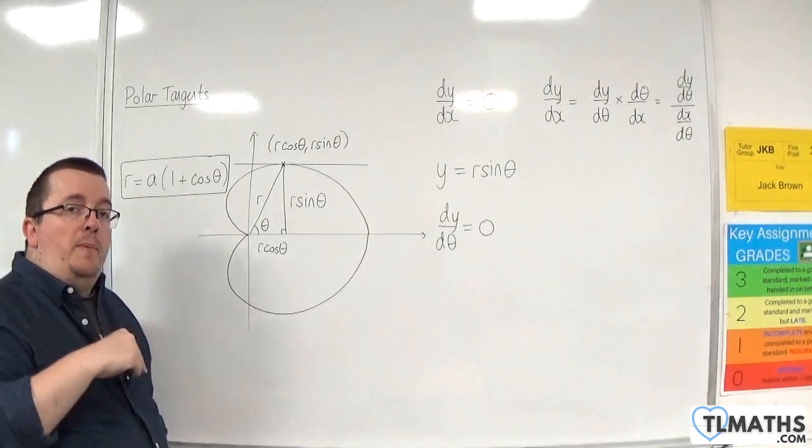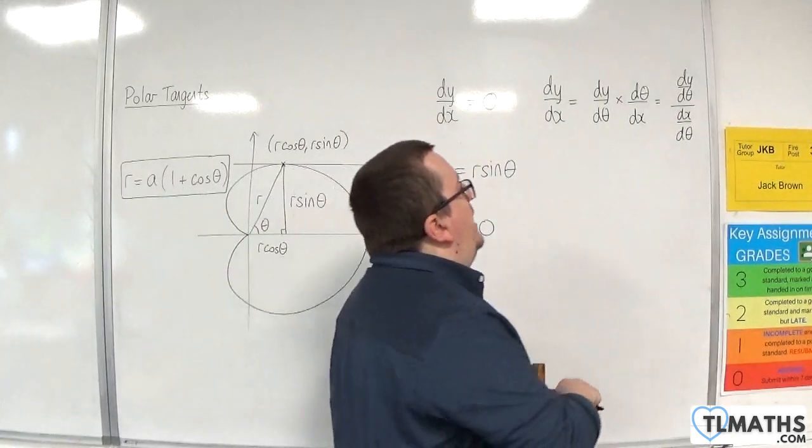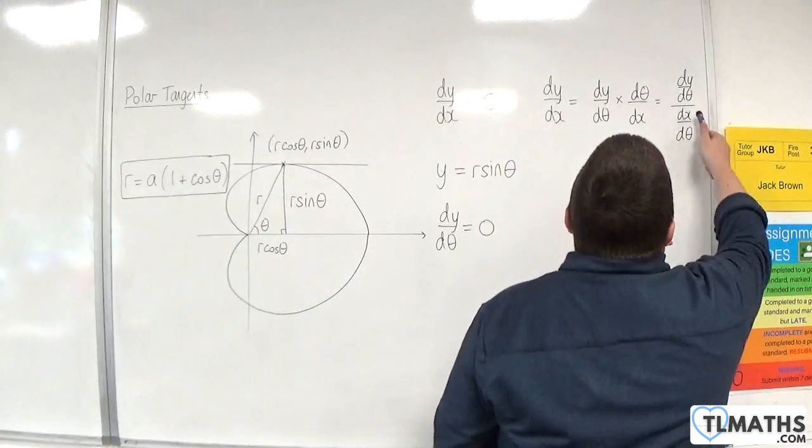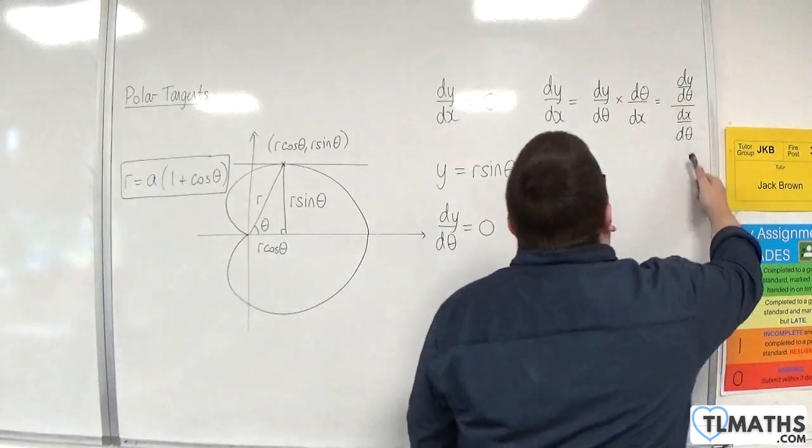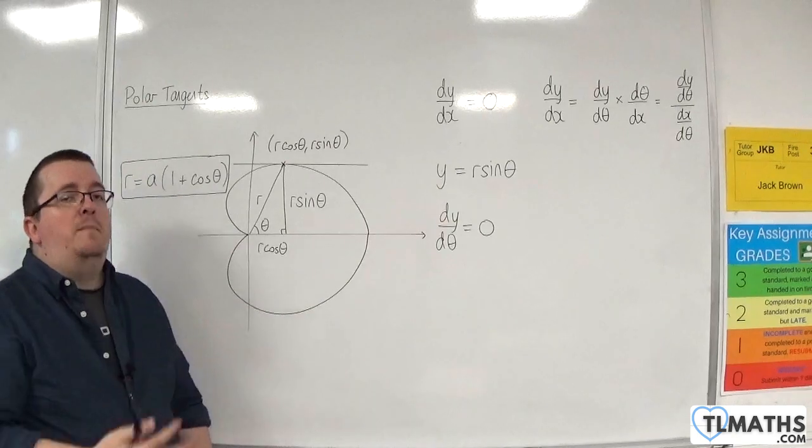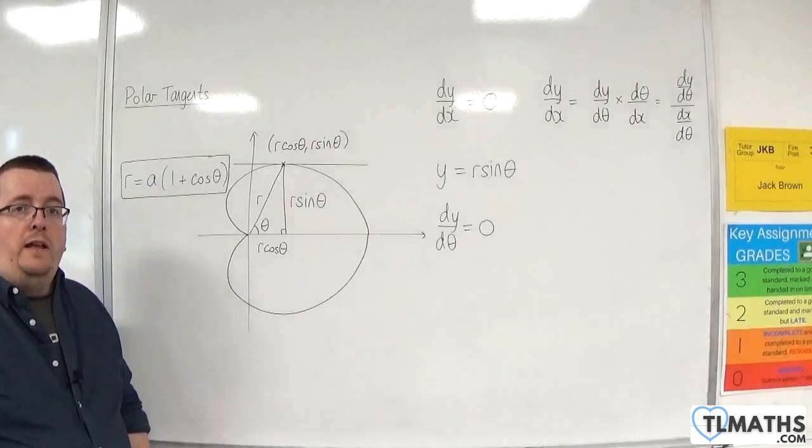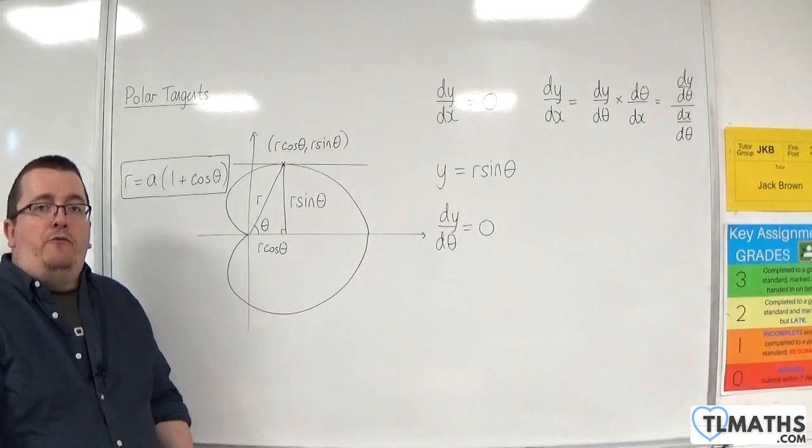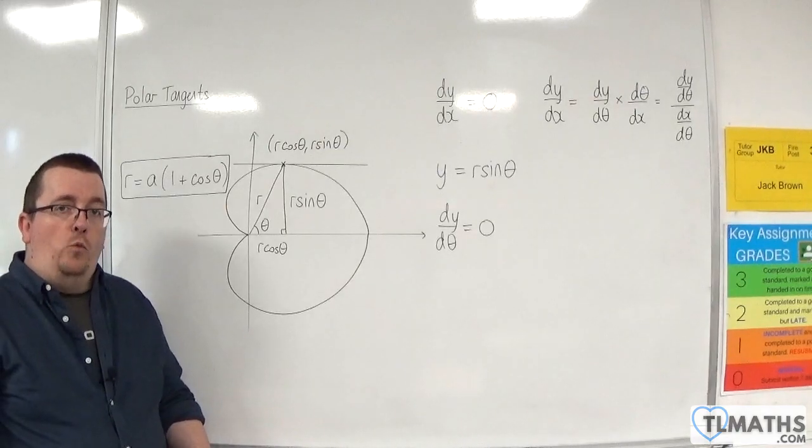And if we want them to be perpendicular, then we're going to need dx by d theta to be 0. That's going to be our main methodology, and I'm going to be working through several examples to show you how this can work.